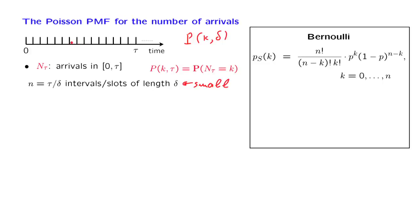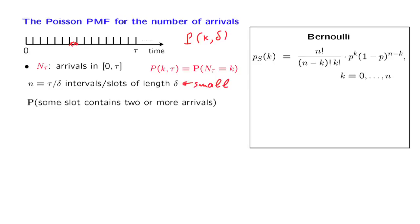During each slot, we may get zero arrivals or one arrival, but there's also the possibility that there may be two arrivals or even more than two arrivals happening during one of the slots. Because of this, the picture we have here is not quite the same as for the Bernoulli process, because in the Bernoulli process each slot yields only 0 or one arrival. So the source of the discrepancy is that here a slot may obtain two or more arrivals — but how likely is this?